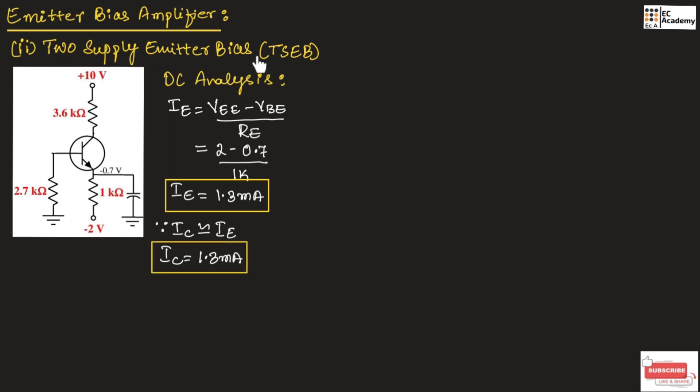In two-supply emitter bias configuration, the base voltage will be very small. That's why we can take the VBE value as 0. So we can write voltage VBE will be approximately equal to 0.